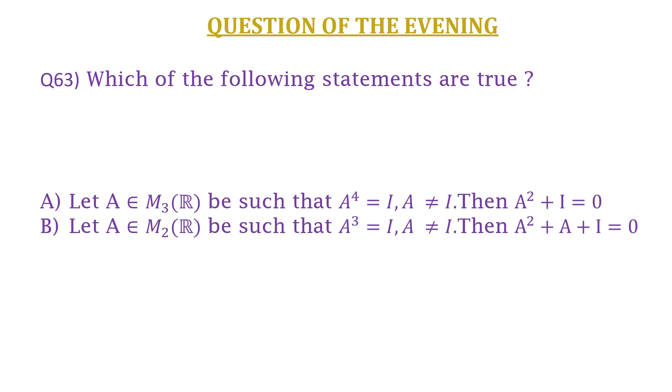B, let A belongs to M₂(ℝ) be such that A³ = I and A ≠ I, then A² + A + I = 0.